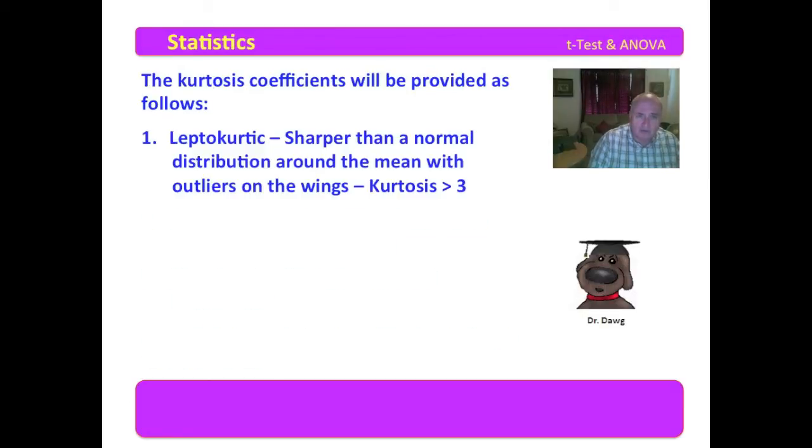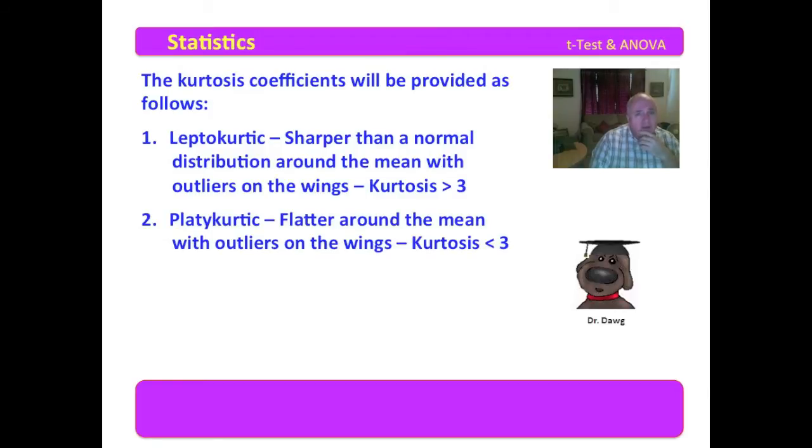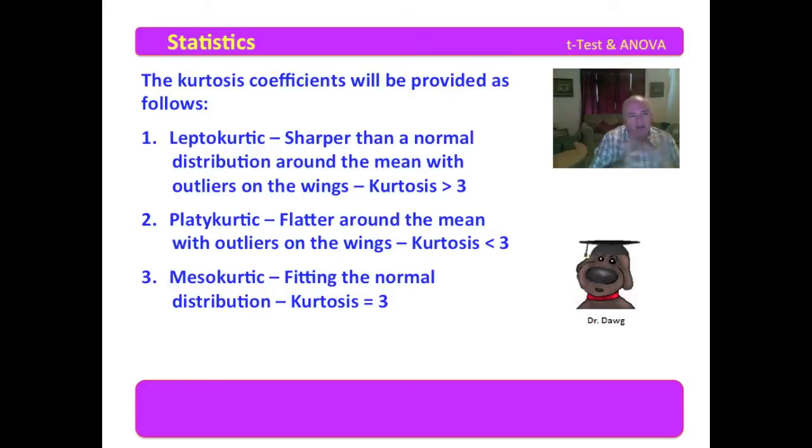The kurtosis coefficients will be provided as follows. The leptokurtic, which is sharper than a normal distribution around the mean, means that your kurtosis coefficient is greater than three. The platykurtic, which means it's flatter with wings out on the edges, means that your kurtosis is less than three. And then the mesokurtic, which is really fitting the normal distribution, is three. Now keep in mind, no data set is ever exactly three. Of course, I'll say that and the first data set we examine will be that with my luck.